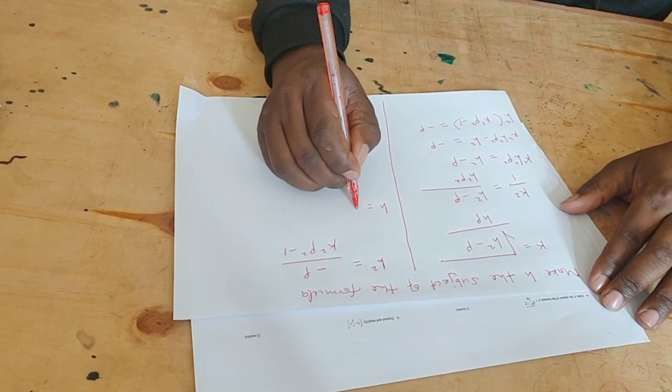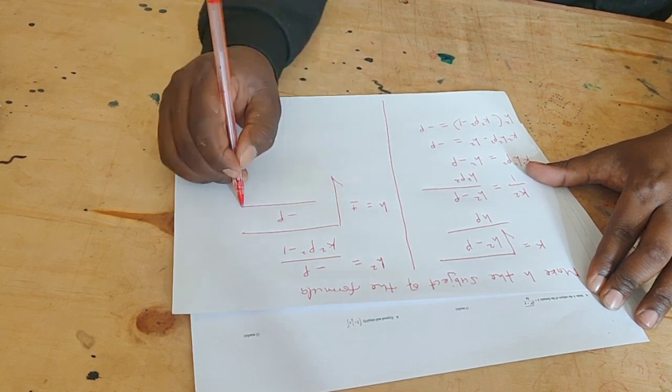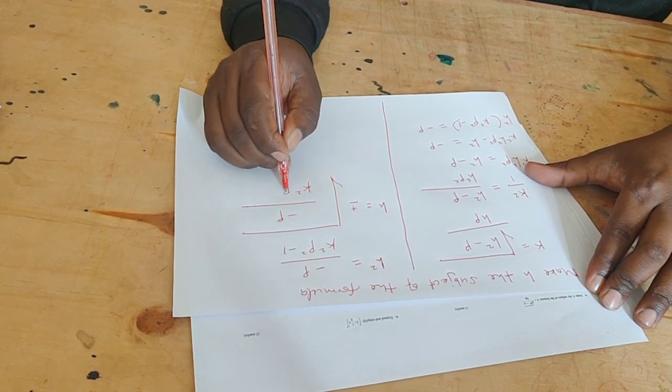That is, h equals plus or minus the root of negative p, all over k squared p squared minus one.